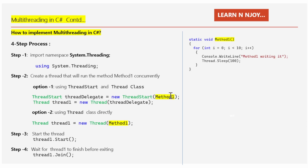Method one is a static method that has a for loop iterating up to 10 times, printing a statement to the console window and making the thread sleep for 200 milliseconds. Once we create the ThreadStart object, we need to create an object of the Thread class: 'Thread thread1 = new Thread(threadDelegate)'. We pass the ThreadStart object into the Thread constructor, and we get an instance of the Thread class stored in the thread1 variable.